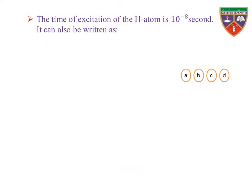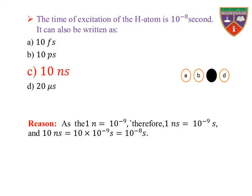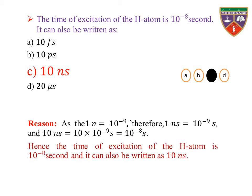The time of excitation of a hydrogen atom is 10⁻⁸ seconds. It can also be written as — option A: 10 femtoseconds, B: 10 picoseconds, C: 10 nanoseconds, D: 20 microseconds. The key is 10 nanoseconds, therefore the correct option is C. Reason: 1 nano equals 10⁻⁹, therefore 1 nanosecond = 10⁻⁹ seconds, and 10 nanoseconds = 10 × 10⁻⁹ = 10⁻⁸ seconds. Hence, the time of excitation of the hydrogen atom is 10⁻⁸ seconds, which can also be written as 10 nanoseconds.